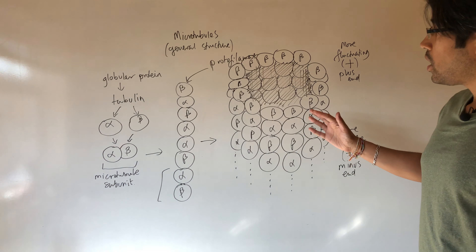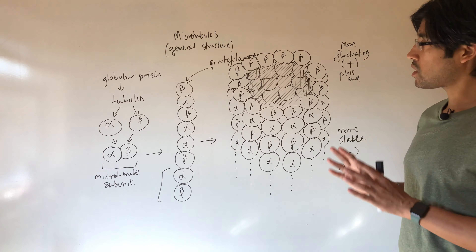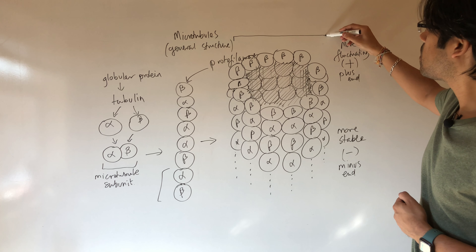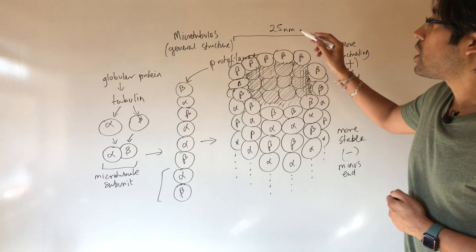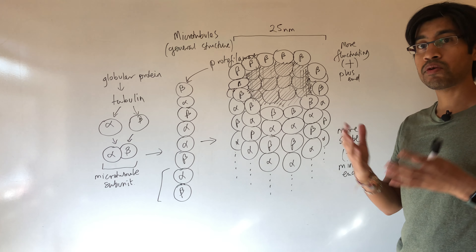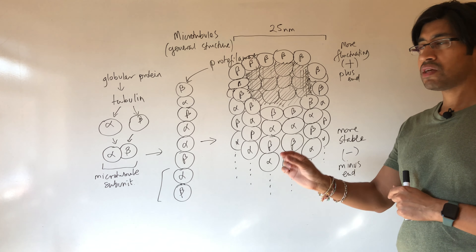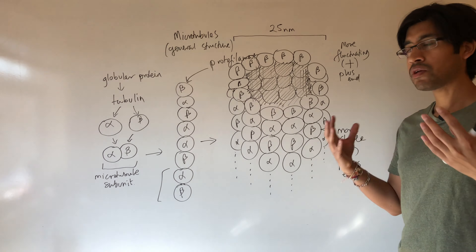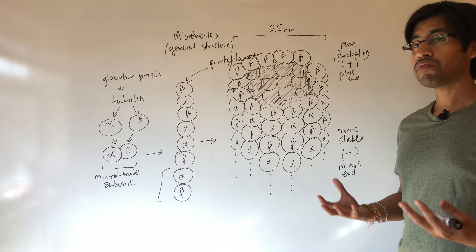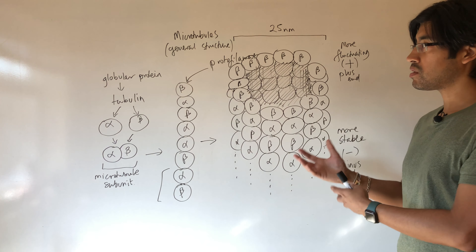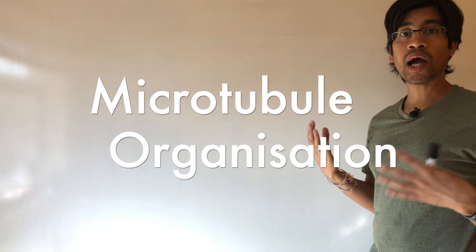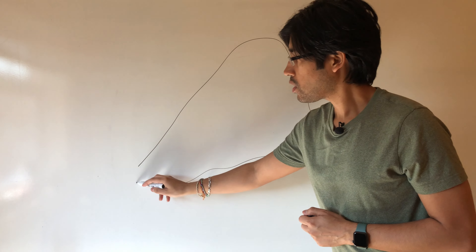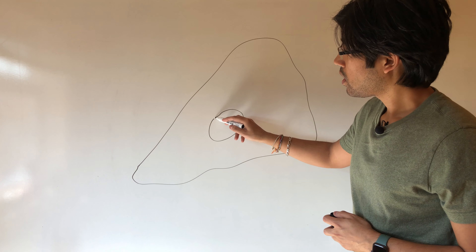Thirteen protofilaments come together to form a cylindrical structure. That is our final microtubule. We've got 13 protofilaments arranged in a cylindrical format — that is essentially our final microtubule structure. Not only that, I want to discuss that this microtubule structure has an inherent polarity.